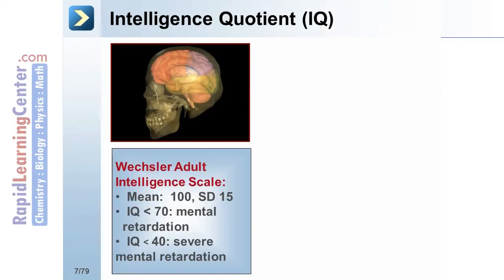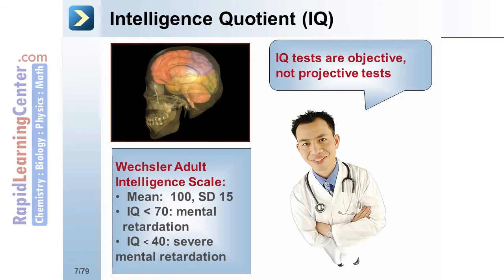The intelligence quotient, or IQ, can be measured using tests that include the Stanford-Binet and Wexler tests. In the Wexler Adult Intelligence Scale, the mean is defined as 100 with a standard deviation of 15. An IQ less than 70 is one criteria for diagnosing mental retardation, and less than 40 is severe mental retardation. It is important to note that IQ tests are objective, not projective tests.